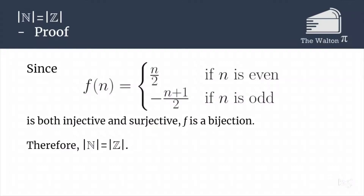Now, this might not make sense. The natural numbers are a proper subset of the integers — there are integers that are not natural numbers. But what this tells us is that they are actually the same size. Infinities mess with your intuition: just because something is a subset of another set does not mean their cardinalities are different. We can have two sets, one nested perfectly inside the other, and still have them be the same size. This does not say that every infinite set has the same size — the integers and the real numbers are not the same size, and I will prove that in a future video.